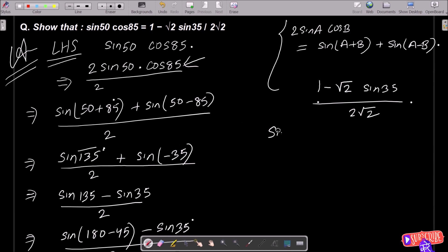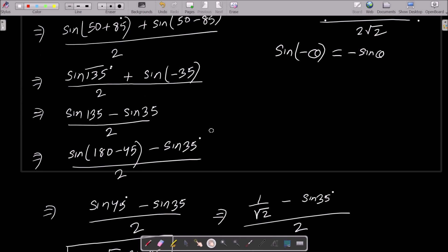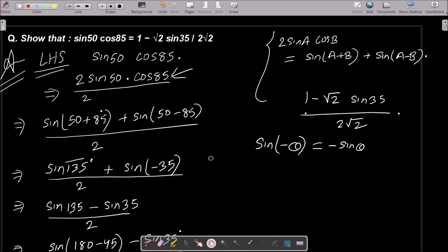Then after, here we know the formula sin minus theta that is equal to minus sin theta. So that here plus minus minus that comes and sin 135 minus sin 35.